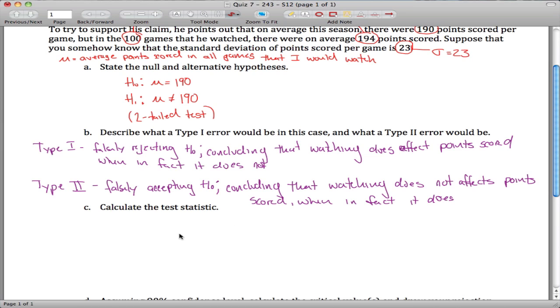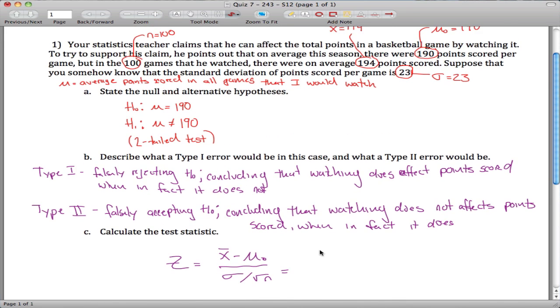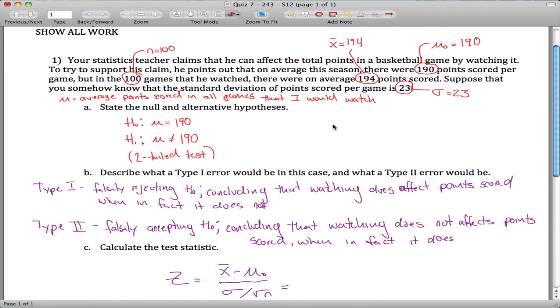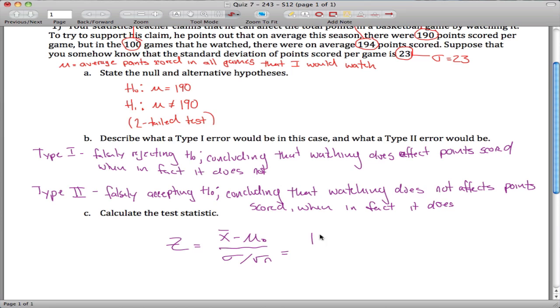Calculate the test statistic. This is a z-test statistic because we know sigma. And the formula for it is something we've seen before, x bar minus mu naught divided by sigma over the square root of n. So plugging it in, all the pieces, x bar was 194. Mu naught was 190, sigma was 23, and n was 100.